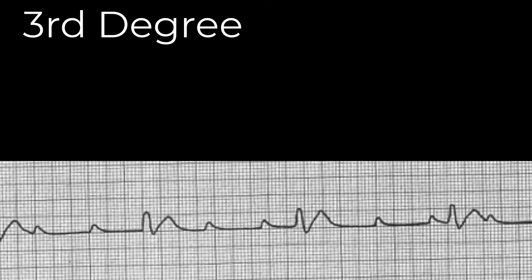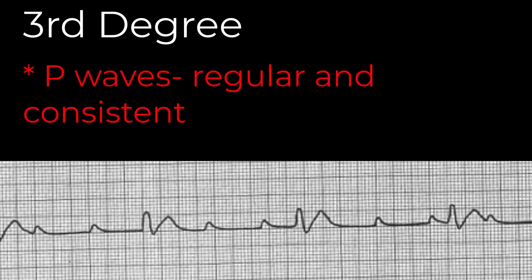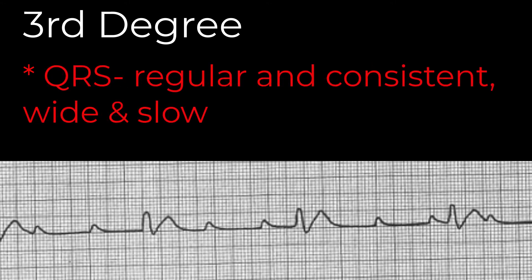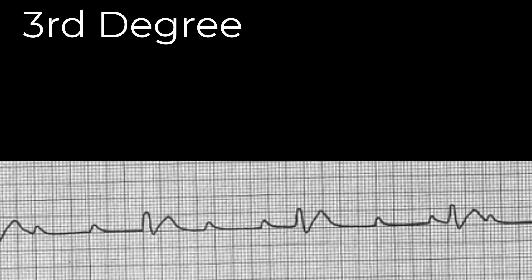We identify a third-degree block by noting a few key facts. The P waves are present, regular, and consistent. The QRS is also regular and consistent, and often those QRS complexes are wide and coming at a slow rate because they are originating below the AV node. This is also referred to as AV dissociation because there is no connection between what is happening in the atria and what is happening in the ventricles. When we analyze this rhythm, the P-to-P is regular, the R-to-R is regular, but there is no relationship between them. If you try to measure PR intervals, they will vary widely because those P waves are not producing those QRS beats.